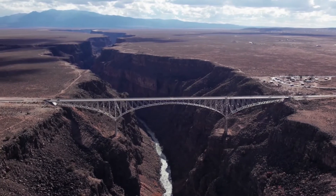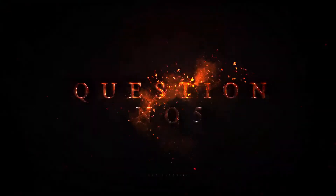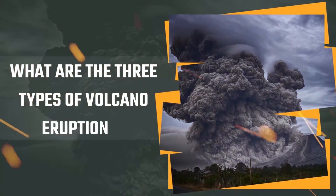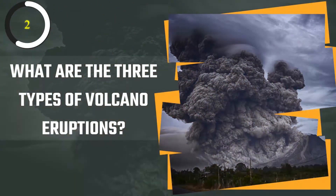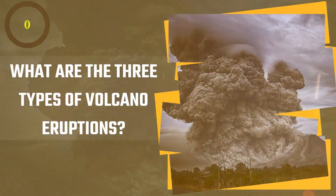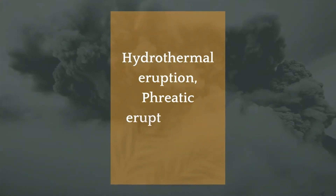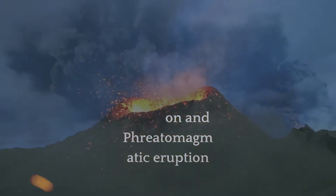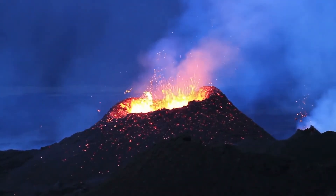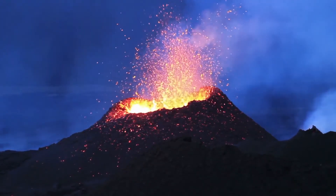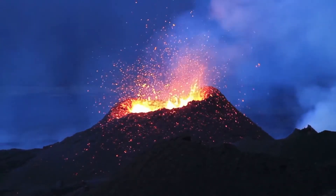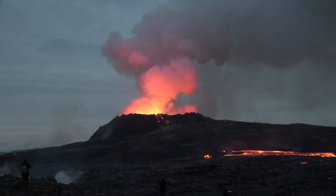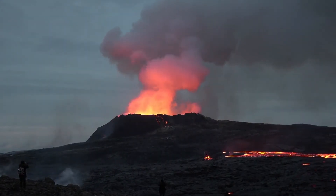Question number five: what are the three types of volcano eruptions? The answer is hydrothermal eruption, phreatic eruption, and phreatomagmatic eruption. The style of eruption depends on a number of factors including the magma chemistry and content, temperature, viscosity, volume, and how much water and gas is in it, the presence of groundwater, and the plumbing of the volcano.